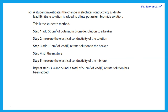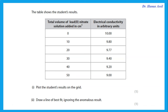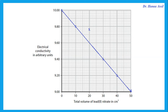A student investigates the change in electrical conductivity as dilute lead nitrate solution is added to potassium bromide solution — adding 10 cm³ of lead nitrate at a time up to 50 cm³. We plot the points and draw a line of best fit, ignoring the anomalous result — the point away from the line is the anomalous result and is not included in the line.